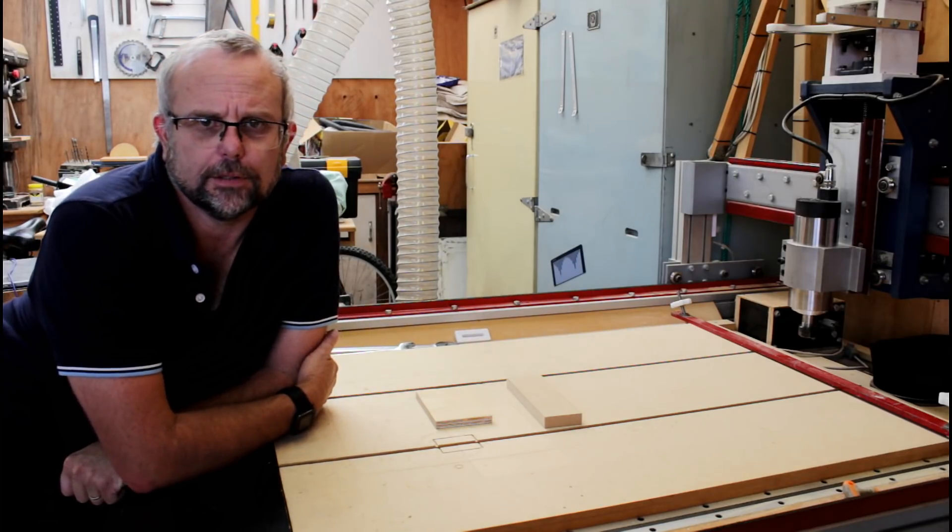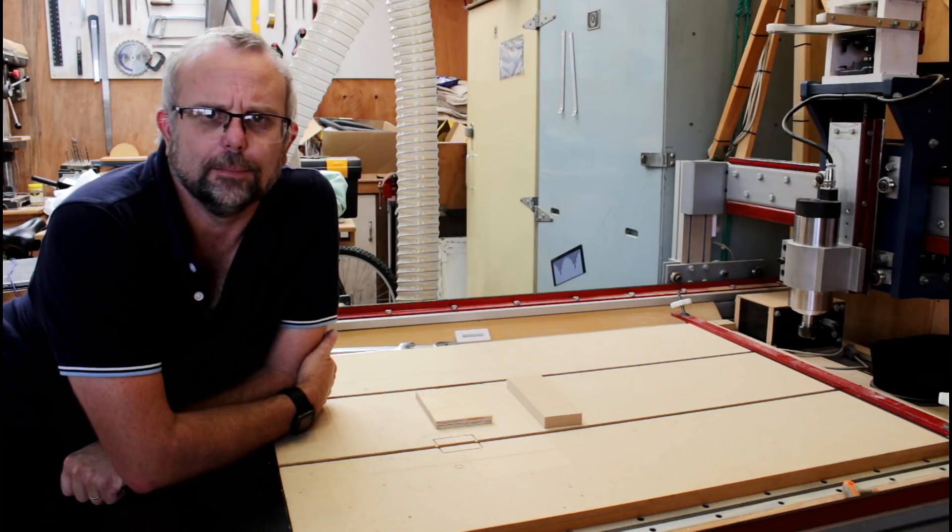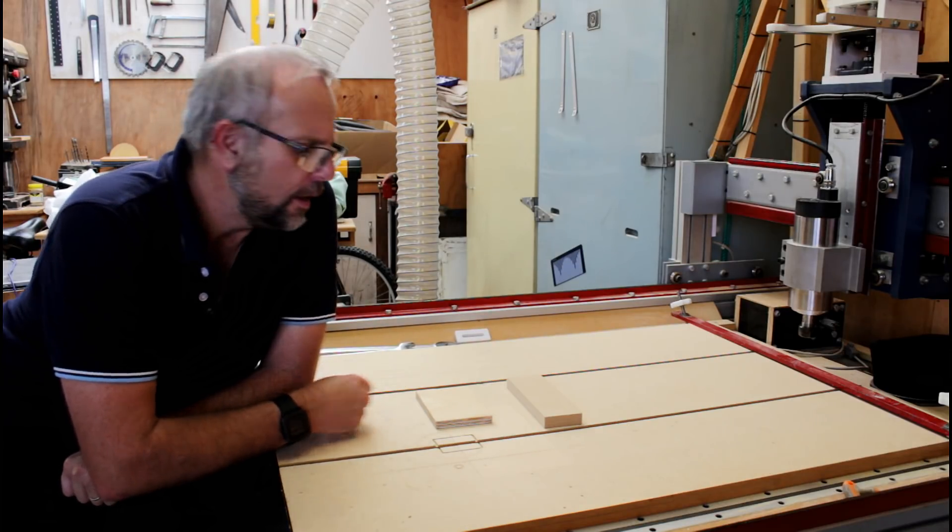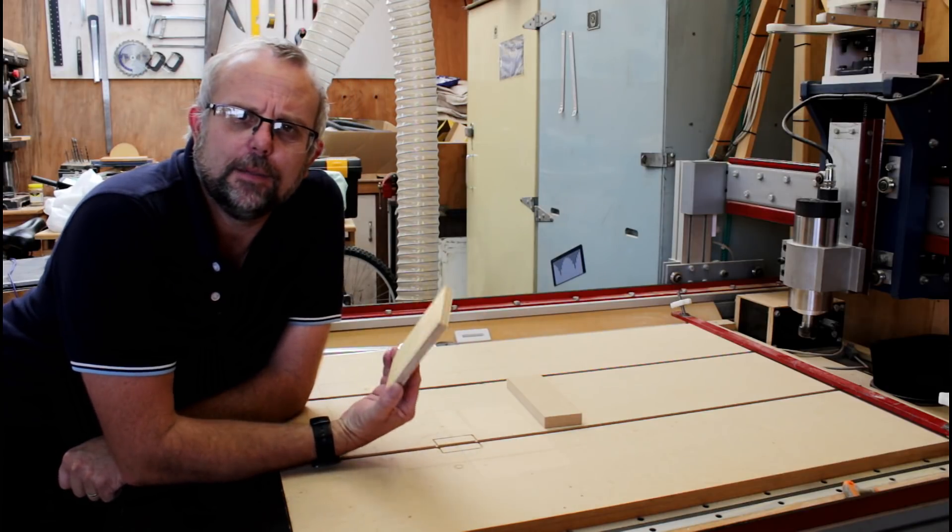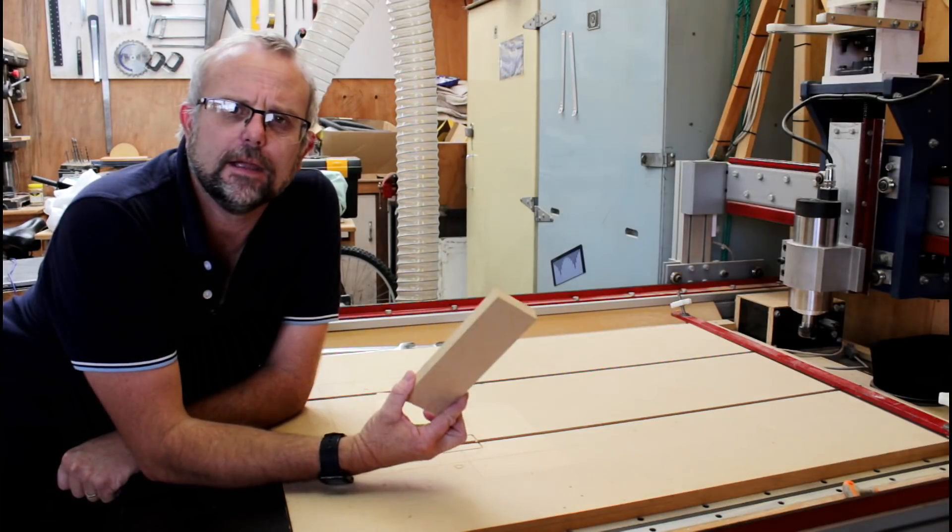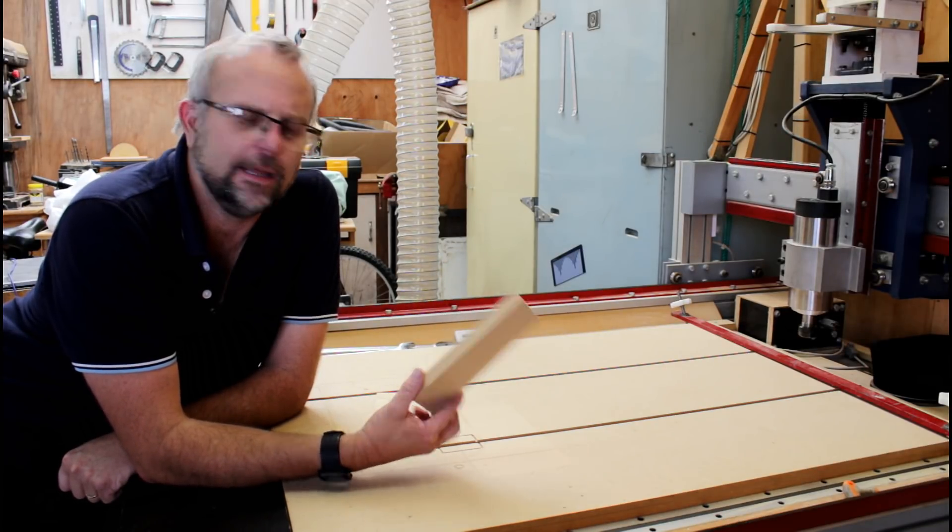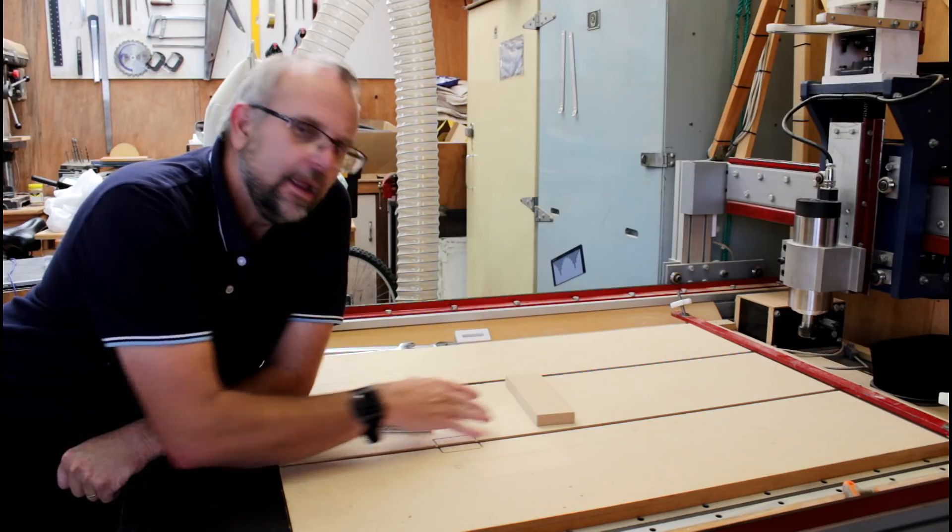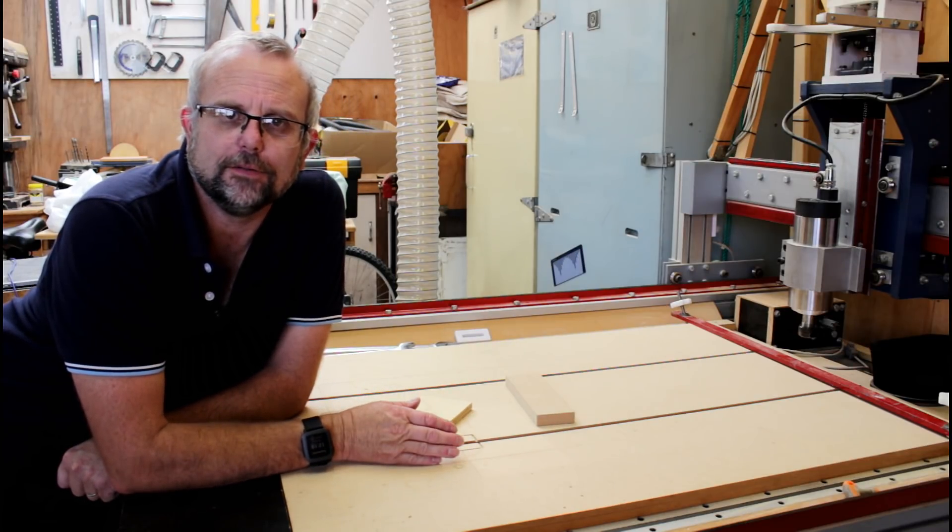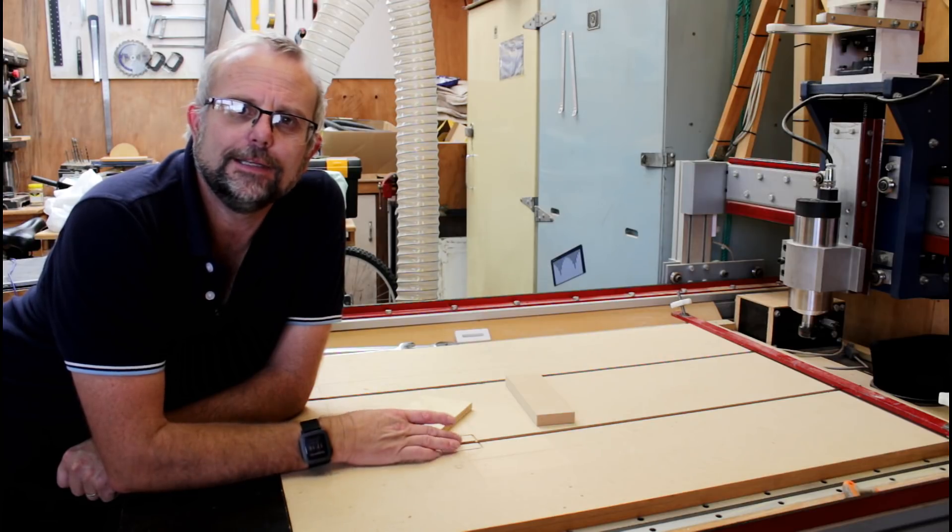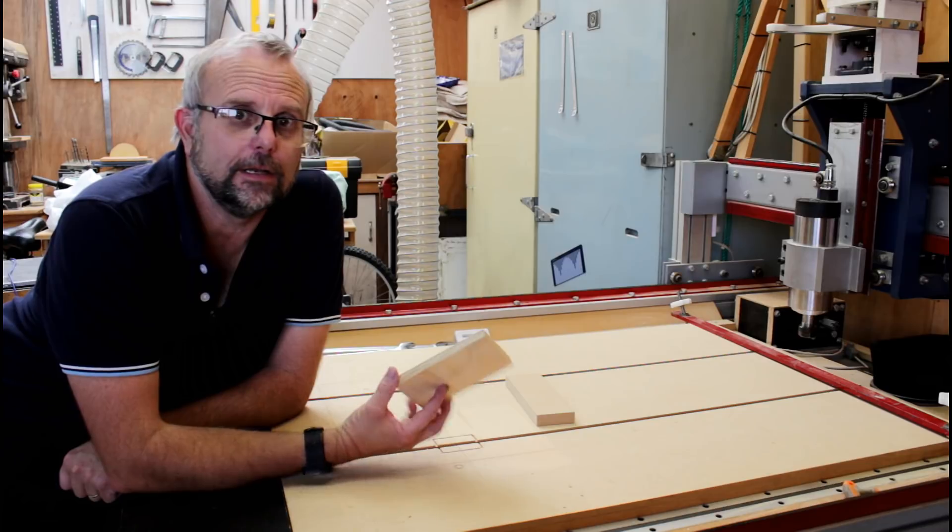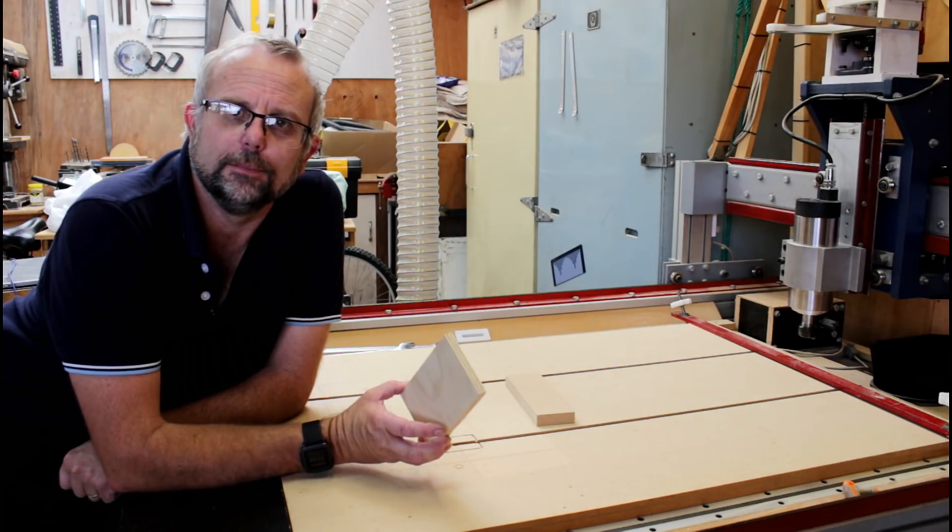Before we have a look at the tool setter, let's understand what the problem is with conventional tool setting. Here we have a piece of 12mm plywood, and over here, some 18mm MDF. Now, these are sold as Nominal Thicknesses. Basically, what it means is, whatever measurement they told me it was in the shop, it won't be.